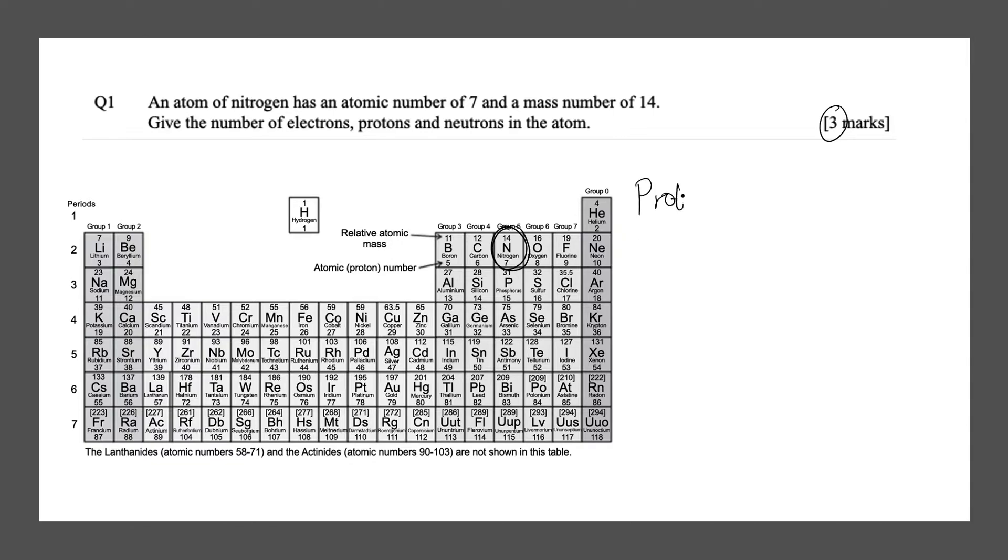The protons will equal 7. The electrons is always the same as the protons, so this will equal 7 as well. And the neutrons is the relative atomic mass subtract the atomic number. So in this case it would be 14 subtract 7, and that would give you 7. So we have 7 protons, 7 electrons and 7 neutrons. Having all those 3 correct will give you these 3 marks.